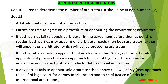If both arbitrators fail to appoint a third arbitrator within 30 days, then parties may approach the Chief Justice of the High Court for domestic arbitration, and the Chief Justice of India for international arbitration. If any party fails to appoint a sole arbitrator, the same rule applies. The appointment of an arbitrator by the Chief Justice would be final and no appeal can be raised against it. While appointing, the Chief Justice should consider the arbitrator's qualification — the arbitrator should be independent and impartial.